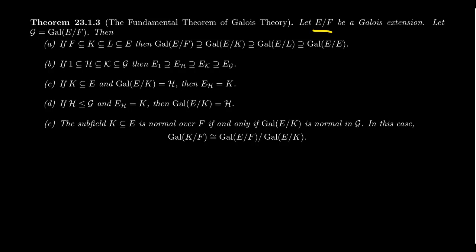Now let's look at the statement of the fundamental theorem of Galois theory. Suppose that we have a Galois extension E over F. For a class like Math 4230, if we were going to prove this, we'd assume this is a finite Galois extension — infinite Galois extensions get a lot more complicated, and so the proof in that case would be beyond the scope of this course. Most of the statement is still true even in the infinite case, once you attach the appropriate Zariski topology to handle things. So we have a Galois extension E over F, and we consider the Galois group of E over F, which we'll abbreviate as G — we assume it's a finite group.